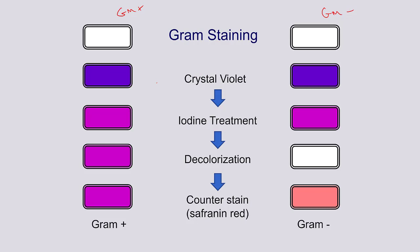The second step is an iodine treatment. What iodine does is it crystallizes the stain, so this is often referred to as a mordant. That basically solidifies the stain and makes it more integrated into the cell wall.